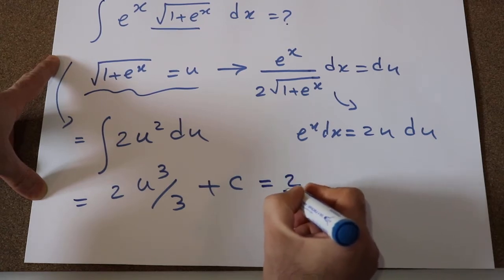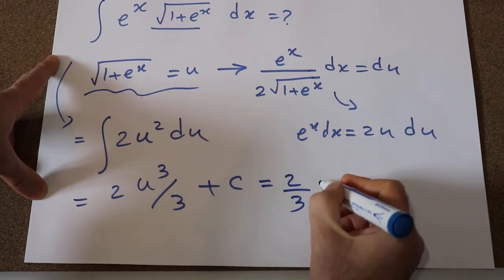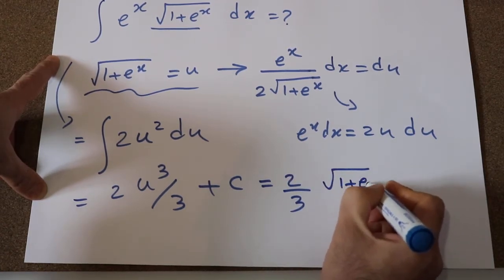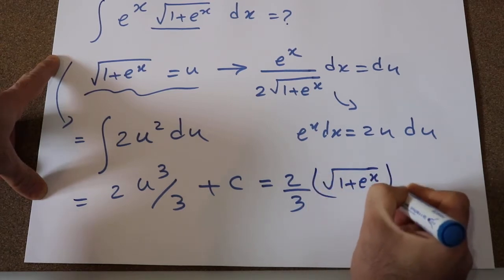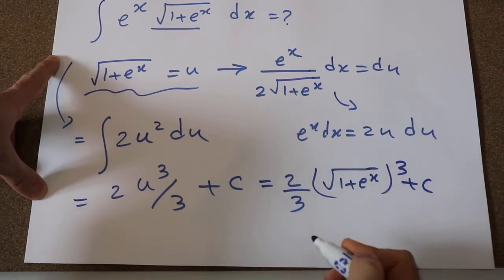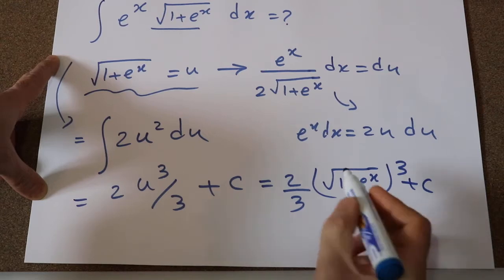Therefore, this one will be equal to 2/3 times square root of 1 plus e^x with the power of 3 plus C, which is the constant of the integral.